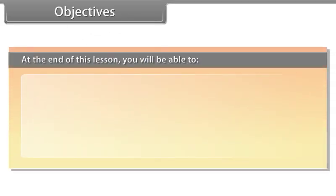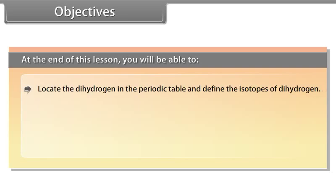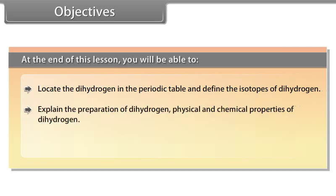Objectives. At the end of this lesson, you will be able to locate the hydrogen in the periodic table and define the isotopes of hydrogen. Explain the preparation of dihydrogen, physical and chemical properties of dihydrogen. Explain hydrides.